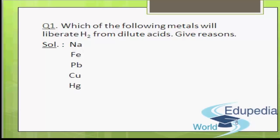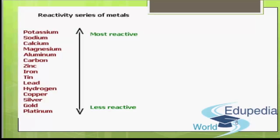We all know about the activity series. The metals which occur above hydrogen in the activity series will liberate hydrogen from dilute acids. This is the reactivity series of metals. Potassium, sodium, calcium, magnesium, aluminium, carbon, zinc, iron, tin, and lead — these metals occur above hydrogen in the activity series, so they will liberate hydrogen from dilute acids.